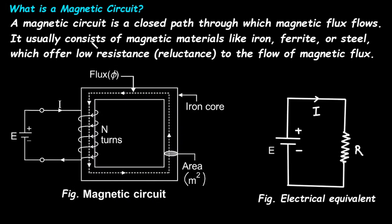A magnetic circuit usually consists of magnetic materials like iron, ferrite, or steel, which offer low resistance — that is, reluctance — to the flow of magnetic flux. In the case of an electrical circuit, there is resistance which opposes the flow of electric current. But in the case of a magnetic circuit, the opposition to the flow of magnetic flux is called reluctance.